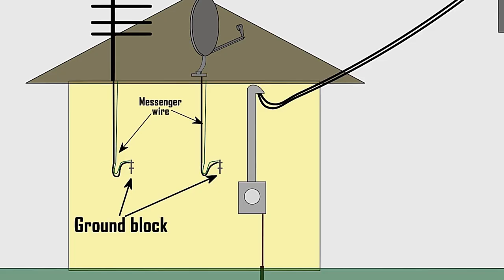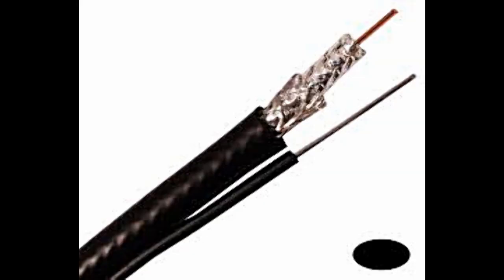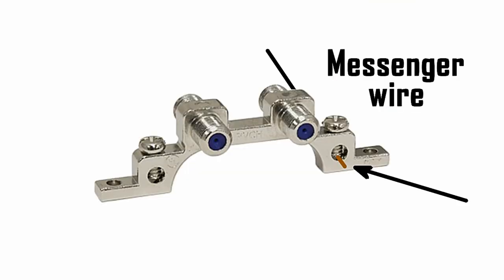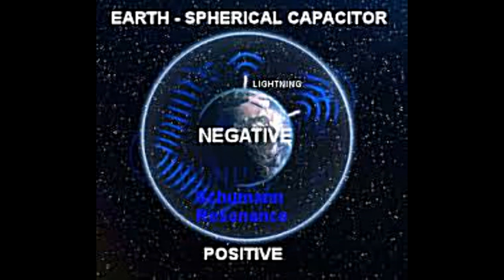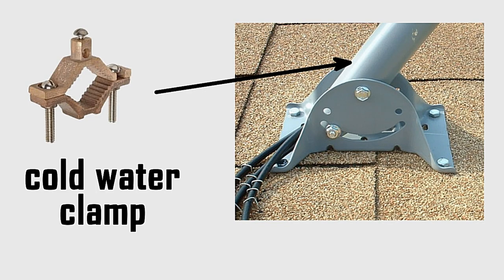Next we're going to install what we call the messenger wire. Now this is a thinner wire than your standard ground cable. So it's between 10 and 18 AWG, that's the American wire gauge standard. And it helps with static electricity that is created in the atmosphere. It helps prevent any outside interference. It's just a slight protection against the small electrons that are in the air.